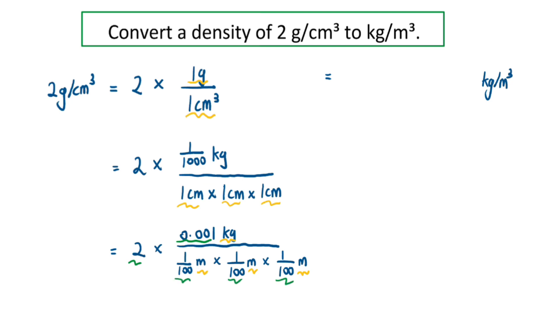We have 2 × 0.001, and for the denominator, the 1/100 can be simplified to 0.01 × 0.01 × 0.01.